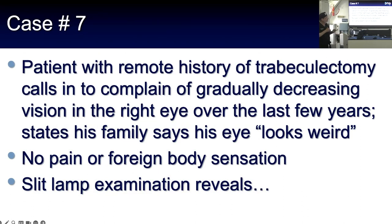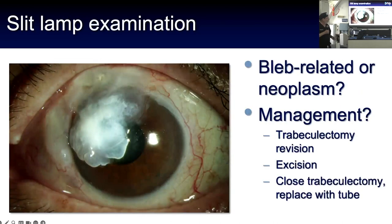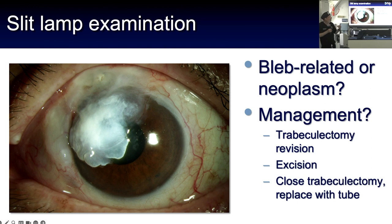Here's one of my own cases. A patient who had a trabeculectomy years past, hadn't been seen for a long time, and calls in to complain of gradually decreasing vision in his right eye with his family telling him his eye looks weird — no pain or foreign body sensation. The slit lamp exam reveals an unusual finding. The differential diagnosis includes malignancy — could this be squamous cell or some conjunctival malignancy? But that goes lower on the list when the patient has a history of a trabeculectomy and the base is where the trabeculectomy is.